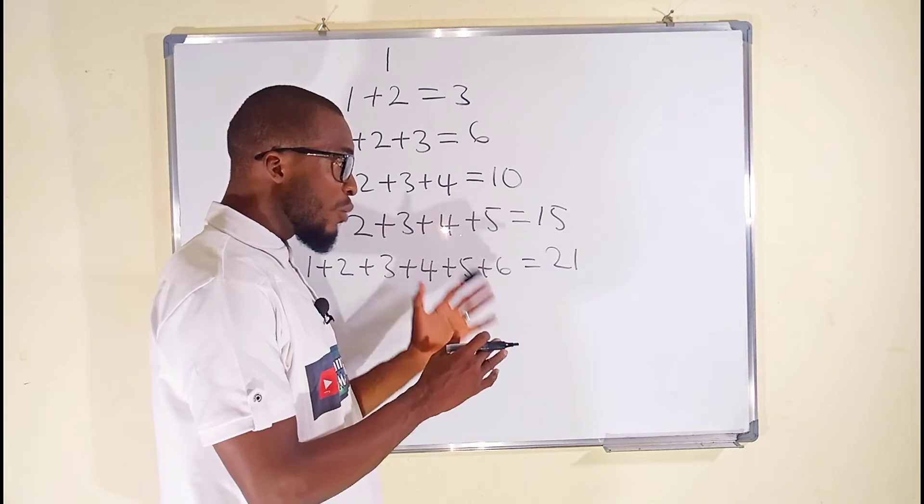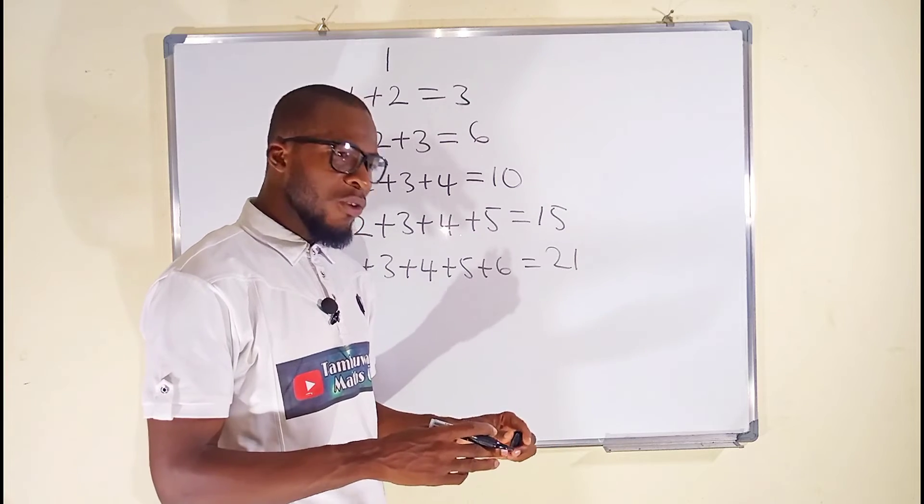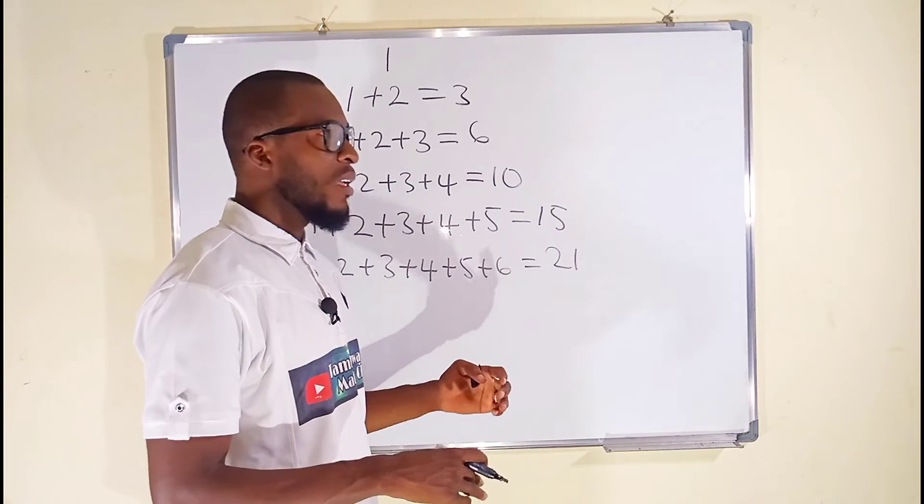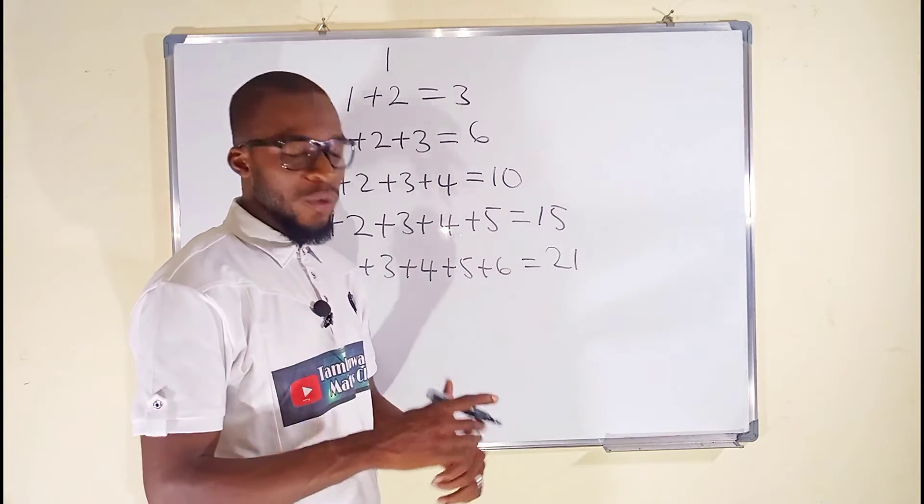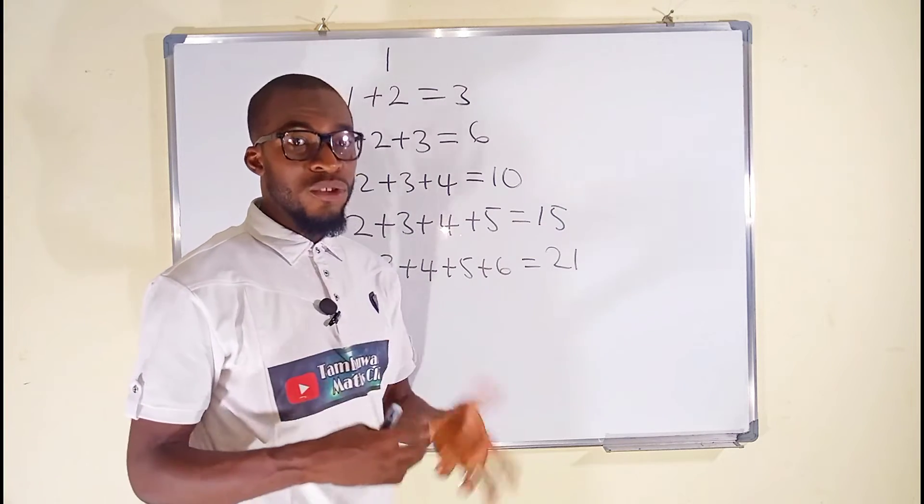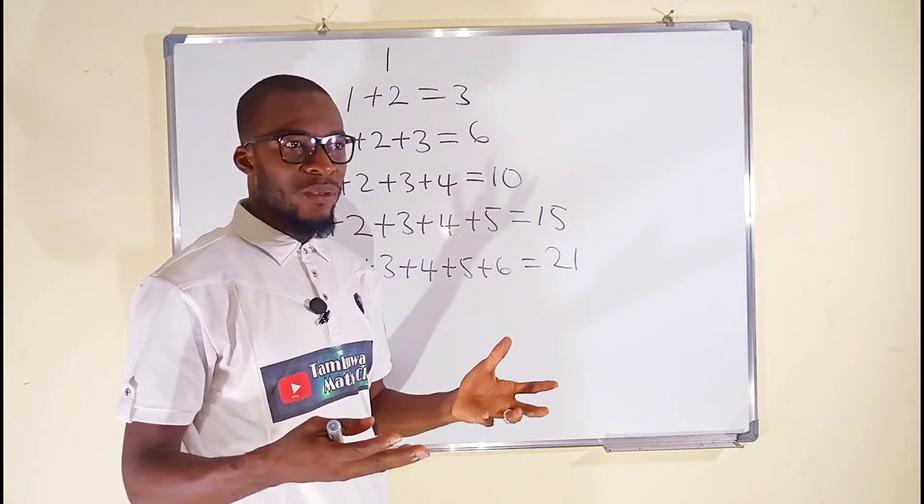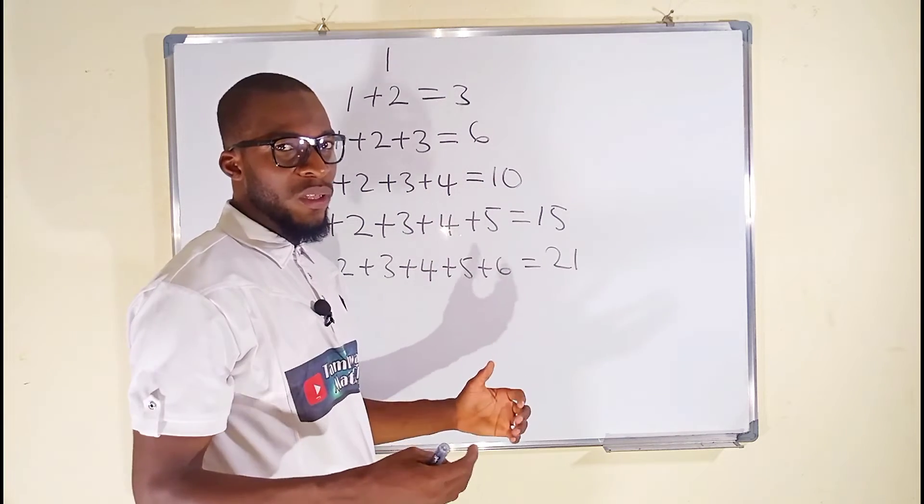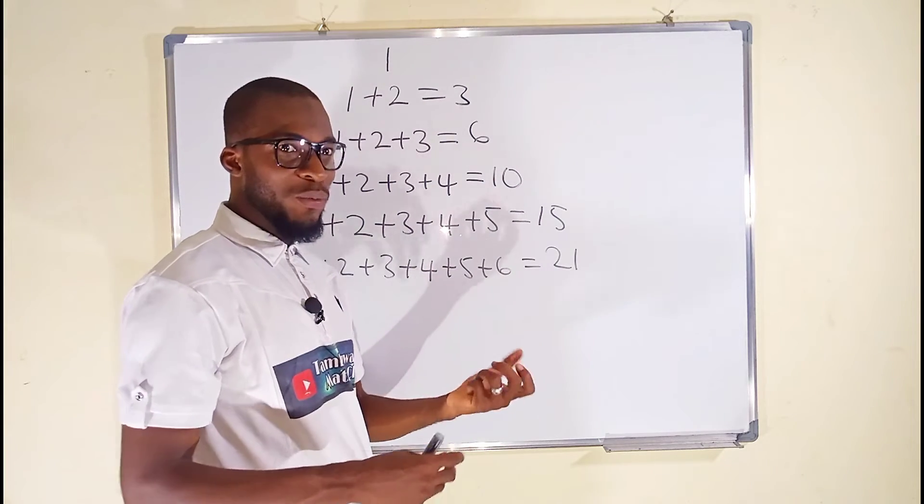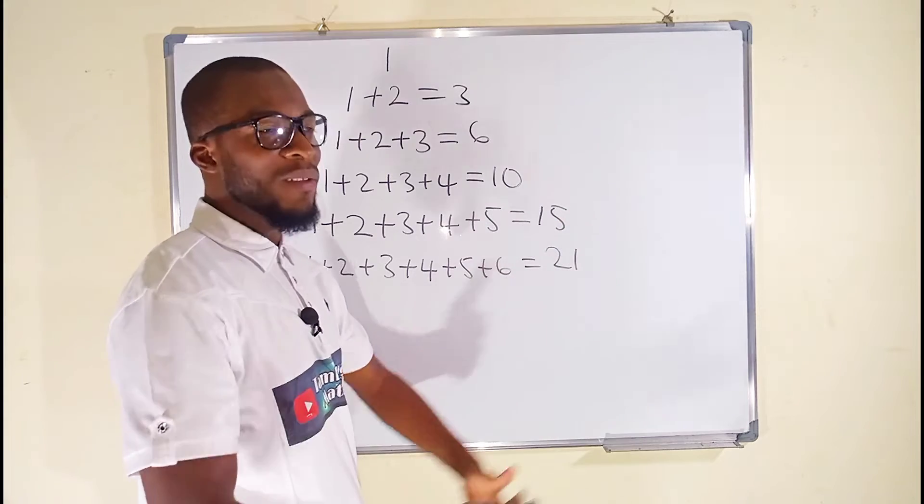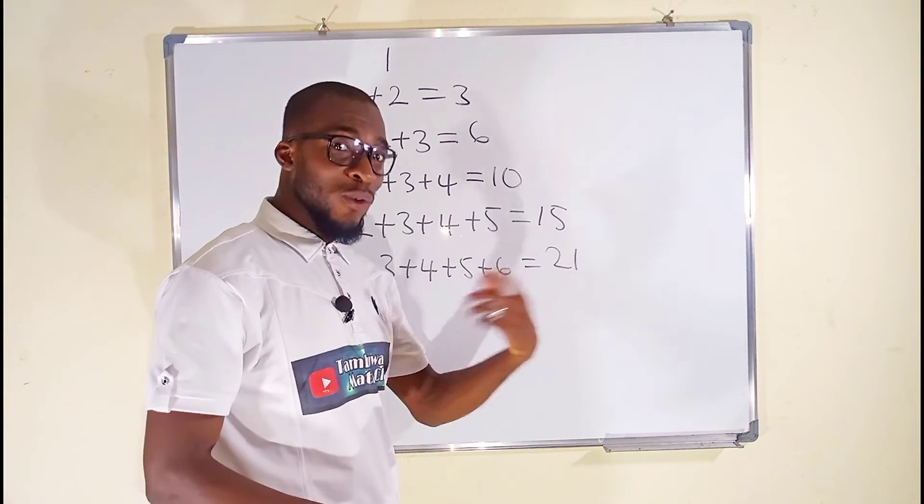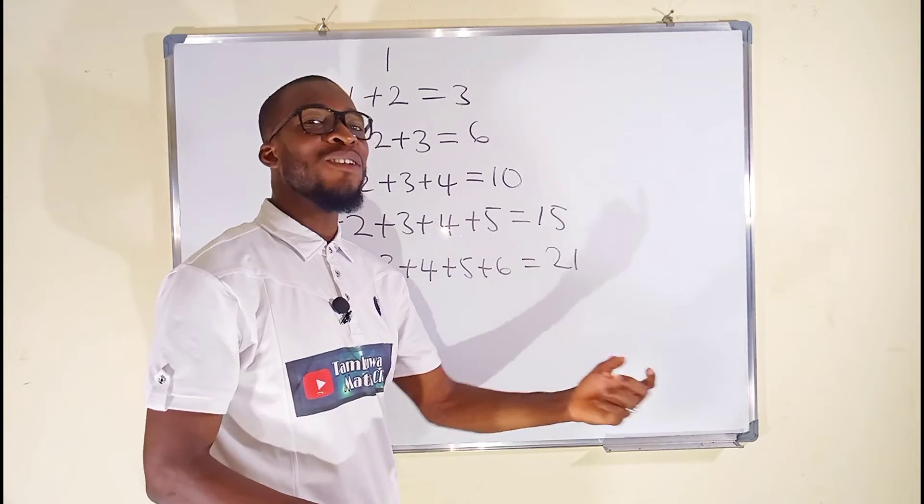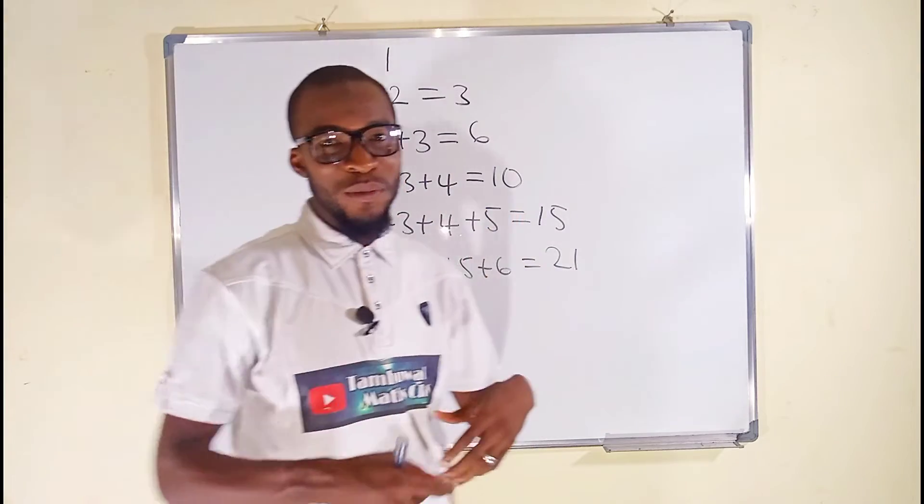So since we realize the numbers keep on increasing, let us use algebra to represent the summation of all the natural numbers. In algebra, we use letters to represent numbers. So instead of doing all this, the whole of this board cannot be enough for us. So we can assign a letter to represent the sum of all the numbers. Then we solve for the letter. Whatever we obtain is said to be the sum of all the natural numbers.